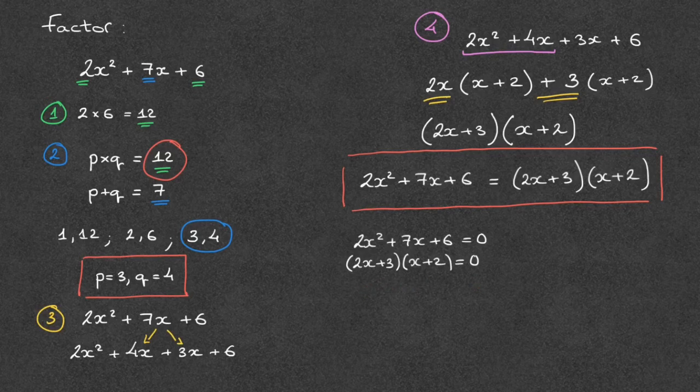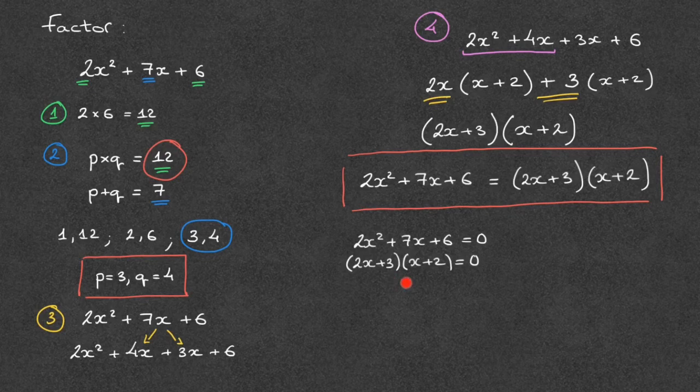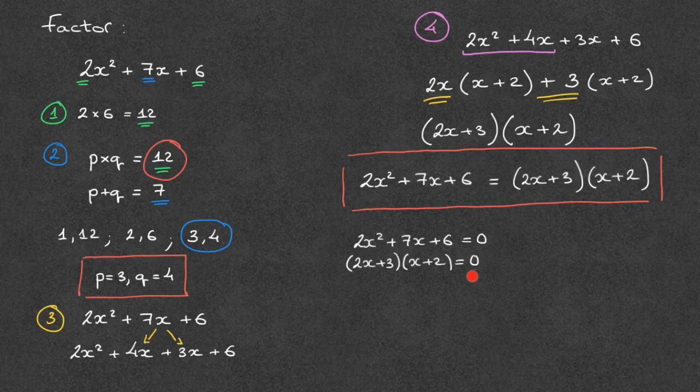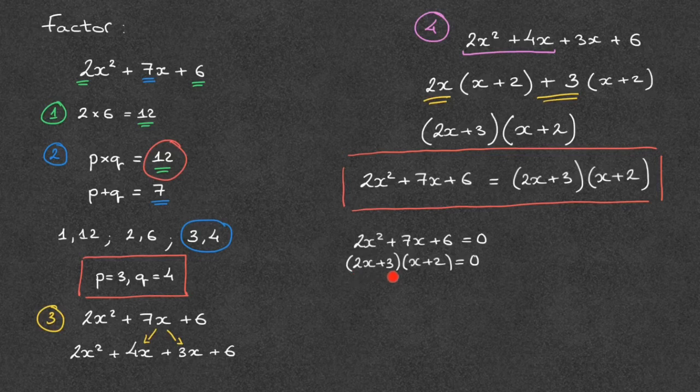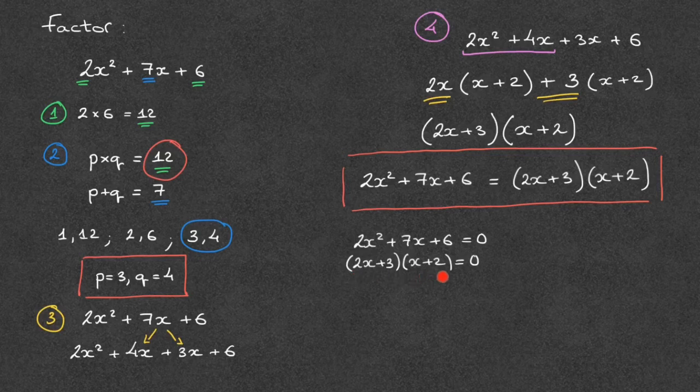This equation is now made up of two pairs of parentheses that are being multiplied together and whose product is equal to 0. But the only way that this product can equal 0 is if either the expression inside the first pair of parentheses equals 0, or the expression inside the second pair of parentheses equals 0.